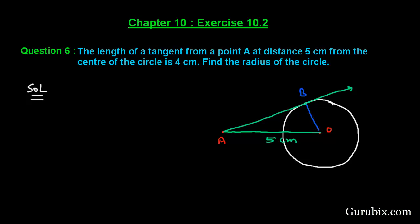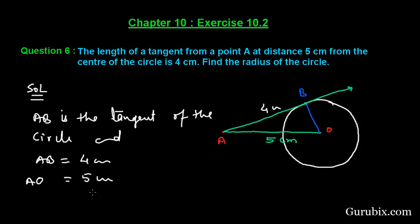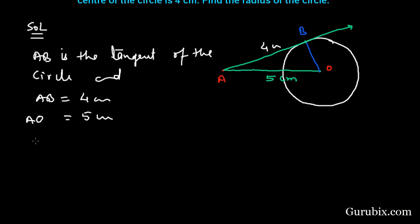So OB is the radius and we have to calculate it. We are given AB is the tangent of the circle and AB equals 4 cm. OA is 5 cm. We have to calculate the radius OB. We know that the radius is perpendicular to the tangent at the point of contact.